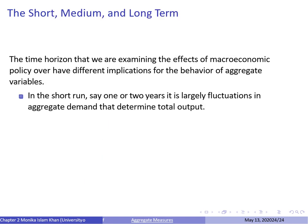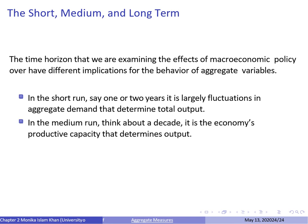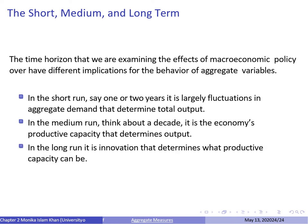The last topic is the time horizon of macroeconomic policy. It's important to differentiate between time horizons because different macroeconomic policies have different implications over the short, medium, and long runs. In the short run — say one or two years — fluctuations in aggregate demand determine total output. In the medium run — like a decade — the economy's productive capacity determines output, meaning the amount of labor and the stock of capital. In the long run, it is innovation, technological progress, and research and development that determine what productive capacity can be.